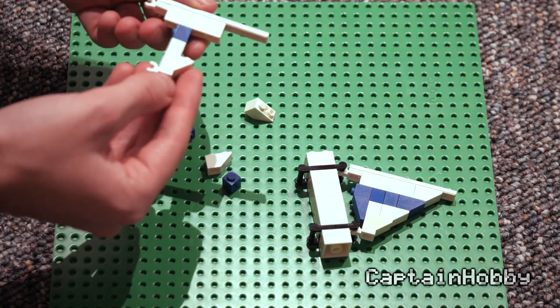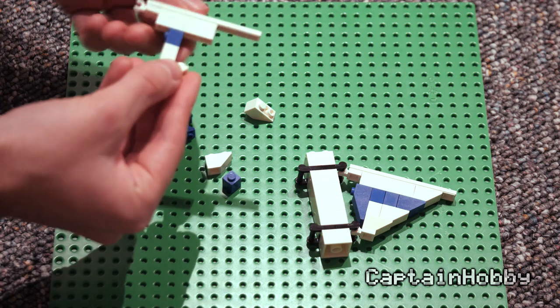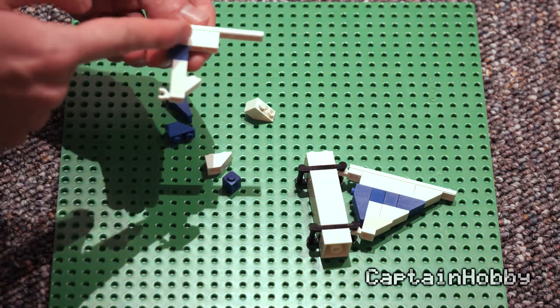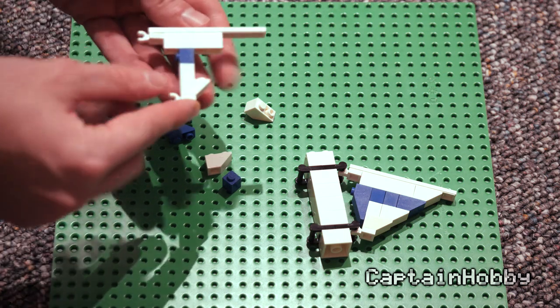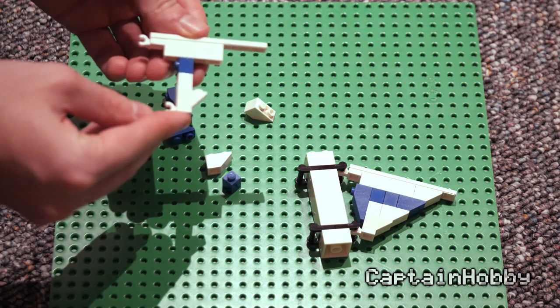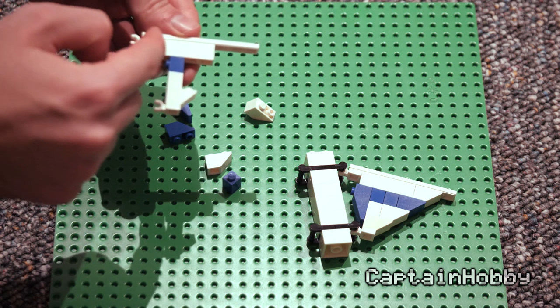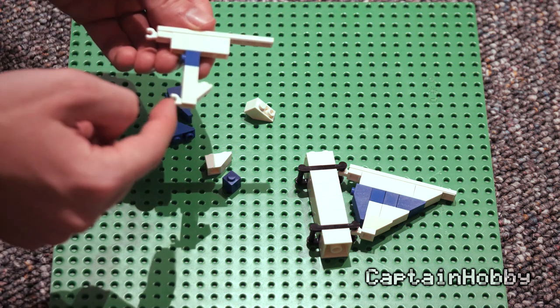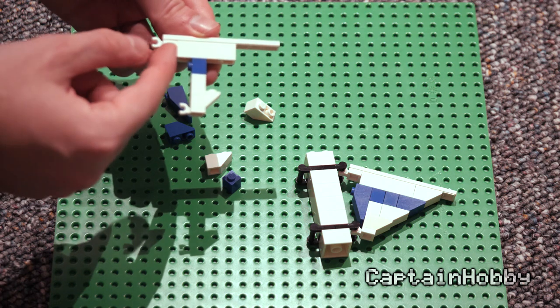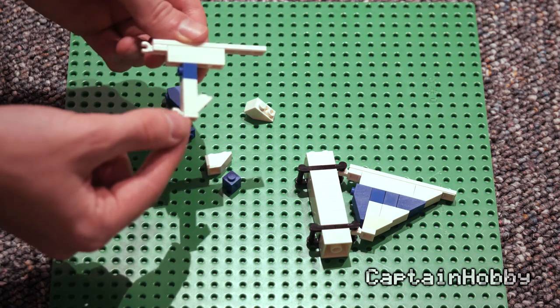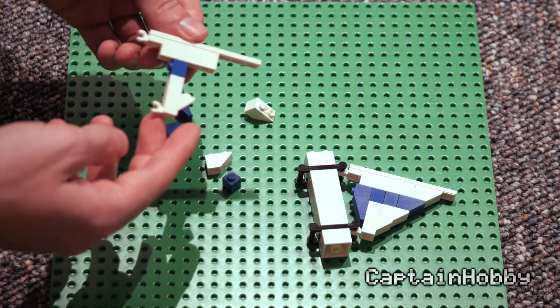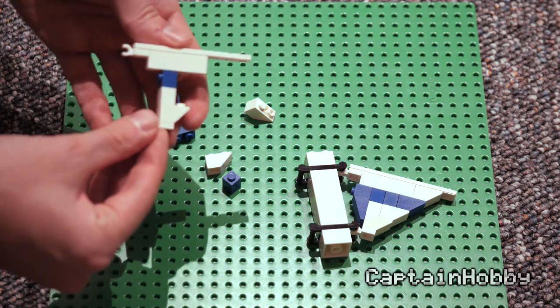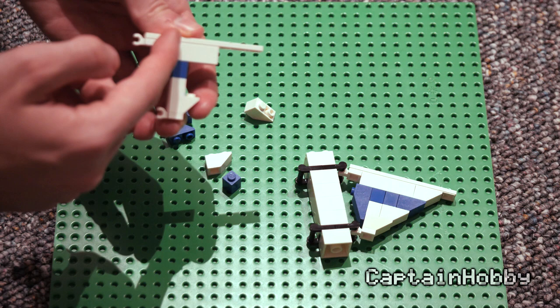So what you've got is you have four bricks worth of height discrepancy between these two claws, which is equal to 12 plates. And you've got two bricks of horizontal discrepancy between these two claws. And each brick is two and a half plates worth of width. So that's five plates. Sometimes when people talk about this in LEGO communities, they might refer to it as half plates even. So this would be 10 half plates,